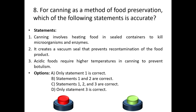Eighth question: for canning as a method of food preservation, which of the following statements is accurate? Statement one: Canning involves heating food in sealed containers to kill microorganisms and enzymes. Statement two: It creates a vacuum seal that prevents recontamination of the food product. Statement three: Acid foods require higher temperatures in canning to prevent botulism.